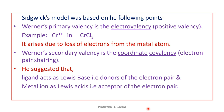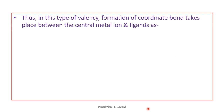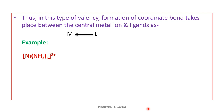Ligands donate the electron pair and metal ions accept the electron pair. Due to this, there is a coordinate or dative bond formation between the metal and the ligands. Thus, in this type of valency, formation of a coordinate bond takes place between the central metal ion and the ligands. Between the metal and the ligands there is formation of the coordinate or dative bond — that means the single-headed arrow, with the arrowhead pointed from ligand to metal, from electron rich to electron deficient.